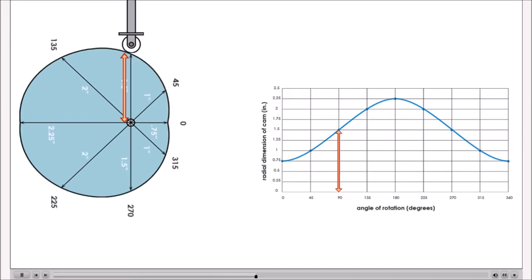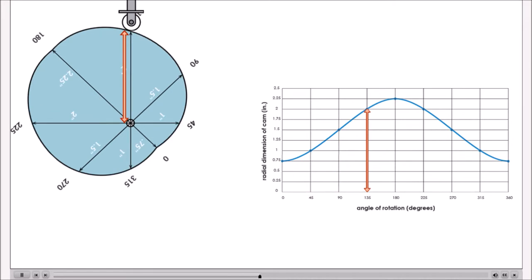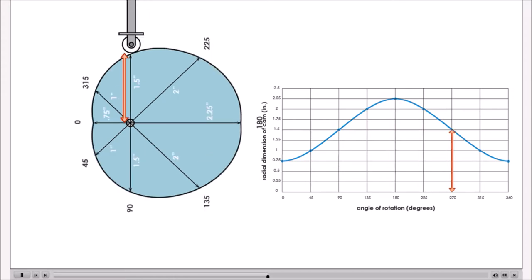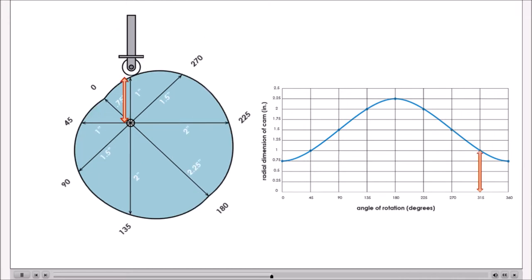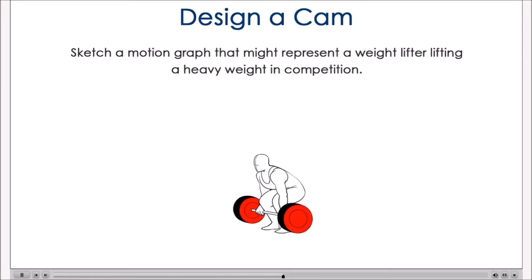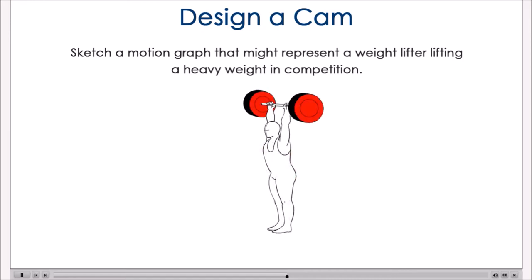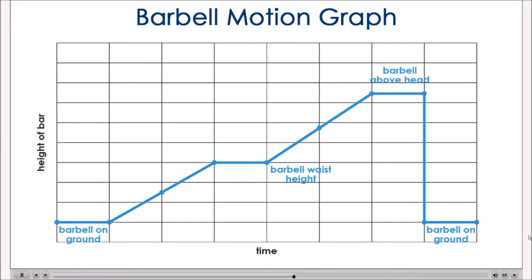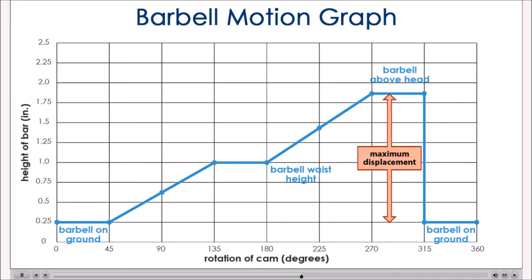Watch as the motion graph is traced out as the cam rotates. Now that you've seen the connection between radial dimension of the cam and the motion graph, let's design a cam to replicate a specific motion. How would you represent the motion of a barbell lifted by a weightlifter in a competition? Sketch the shape of a motion graph you might use. This graph could represent that motion — note that the independent variable is time. If we wanted to replicate this in an automata using a cam mechanism, we could use rotation of the cam as the independent variable.